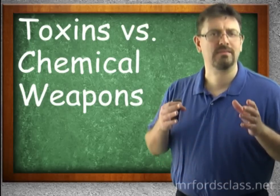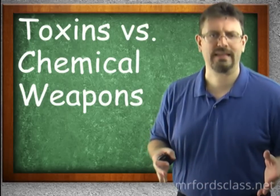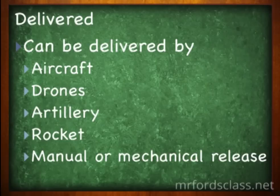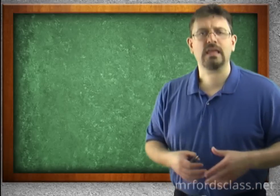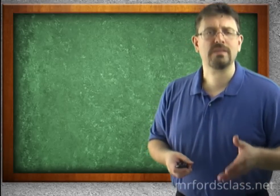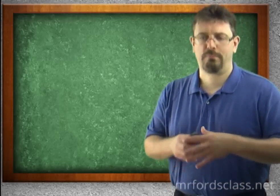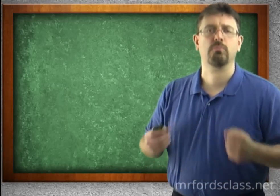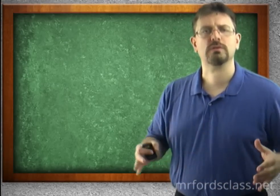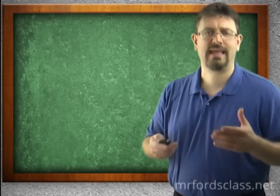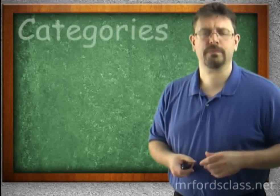Chemical weapons can be delivered by lots of different means. They can be delivered by aircraft, drones, artillery, rockets, or missiles. They can be manually released or mechanically released. If you look at Aum Shinrikyo, they used bags that they poked a hole in with umbrellas to release the poisonous gas that they used.